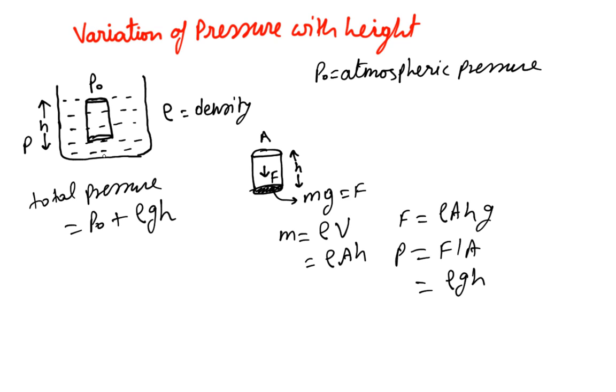As we go down, the pressure increases. That's why we see that deep-water fishes are actually very thin—because of the high pressure they have to tolerate.